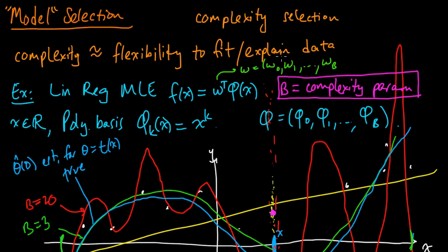the complexity controlling parameters, they control how much data, how many different types of, how many different data sets your model can explain. So they control the flexibility to fit or explain the data. And that's what it all really comes back to.